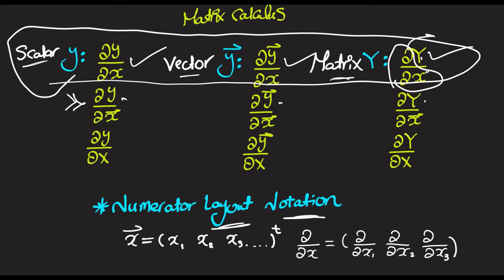The first layout notation is called the denominator layout notation. For this notation, the convention is: if you would like to find the derivative of a matrix or a vector with respect to whatever, what you have to do is first take the transpose of that matrix or vector. But now, I'm going to be using the numerator layout notation, which is what I used in the last video.